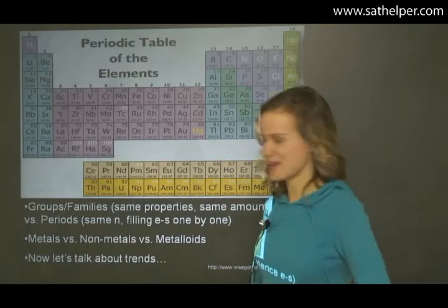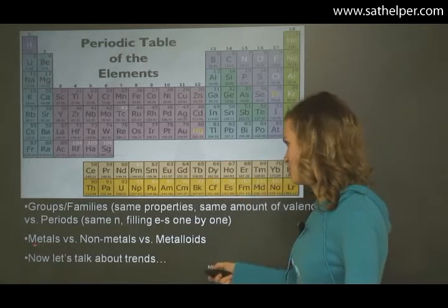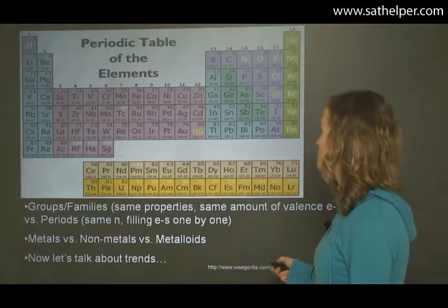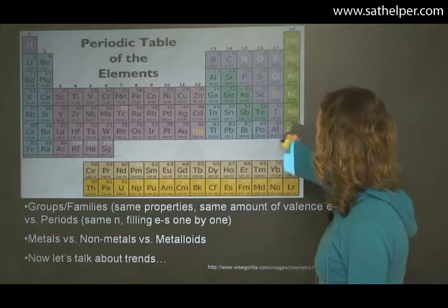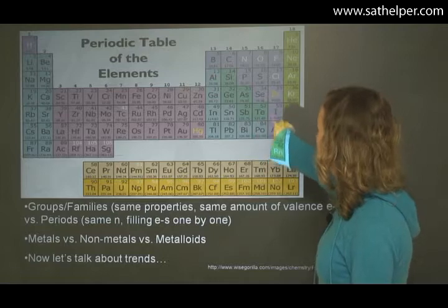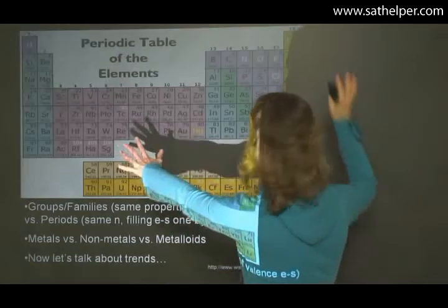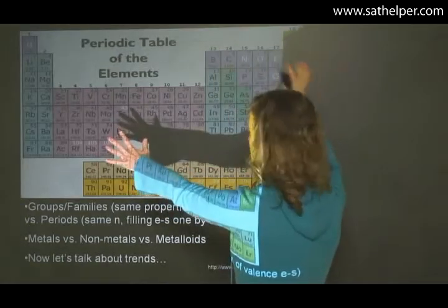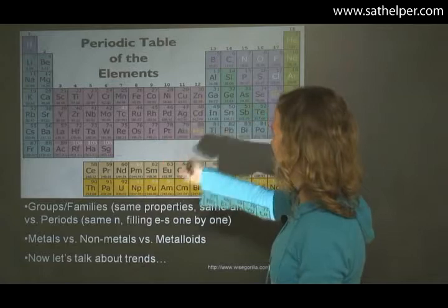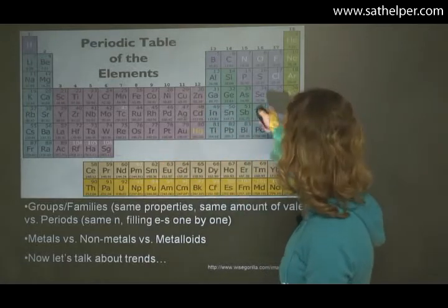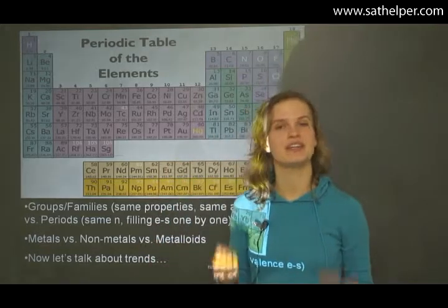One electron in the P block, two, three, four, five, six. But they also have different properties, so they're not like the groups. Let's talk about metals versus non-metals versus metalloids. Right here we have this little step, and around this step we have some elements that are neither metals nor non-metals. On each side of this step, we have non-metals and metals. Over here we have metals, and over here we have non-metals, and here we have some elements in between that are called metalloids.